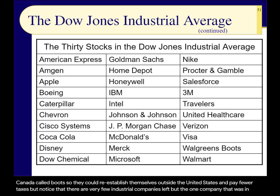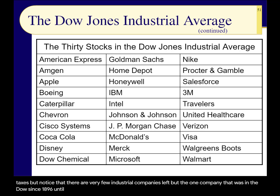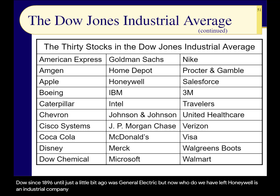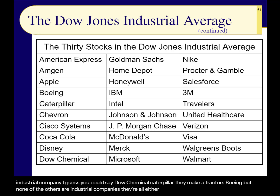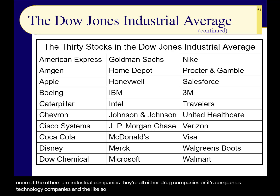The one company in the Dow since 1896 until just recently was General Electric. What's left that's actually industrial? Honeywell, Dow Chemical, Caterpillar — they make tractors — and Boeing. But none of the others are industrial companies. They're drug companies, insurance companies, technology companies, and the like. So in my humble opinion, everyone talks about the Dow — just ignore it.